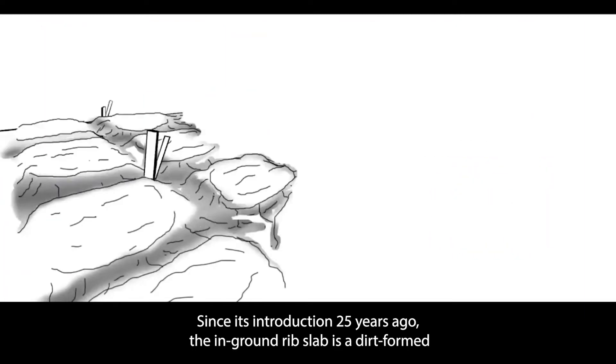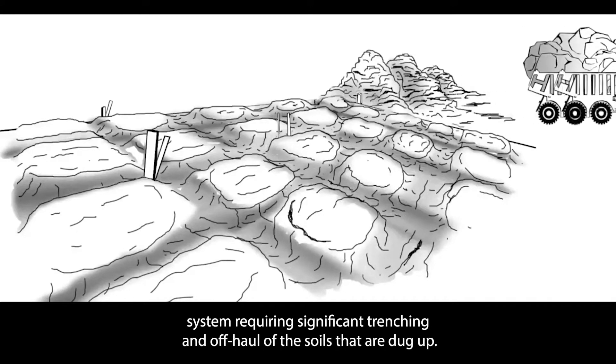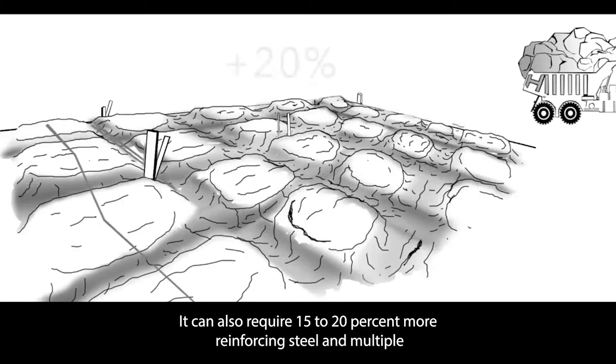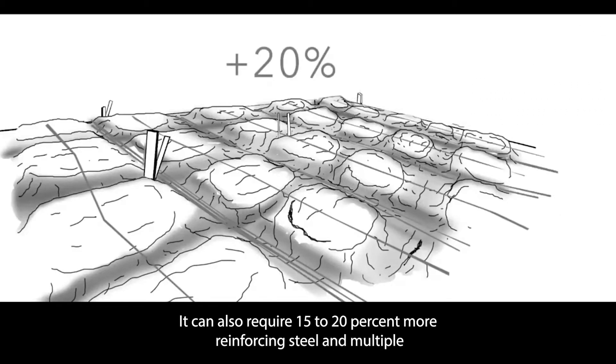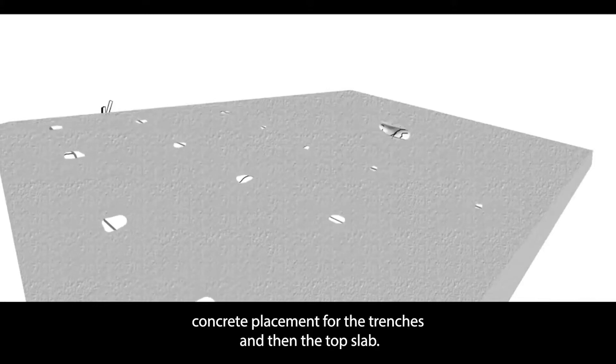The in-ground rib slab is a dirt form system requiring significant trenching and off-haul of the soils that are dug up. It can also require 15 to 20 percent more reinforcing steel and multiple concrete placements for the trenches and then the top slab.